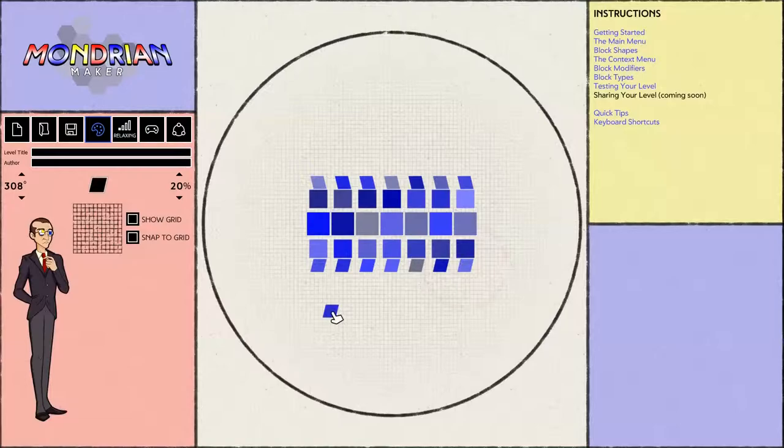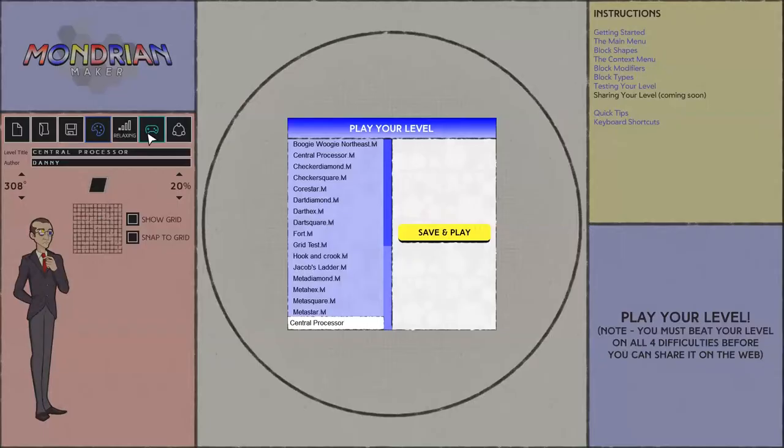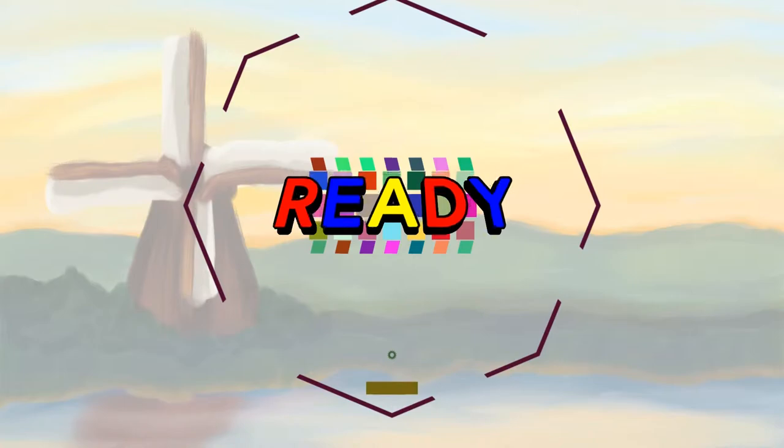Now I like the look of this level, so what I'm going to do is I'm going to call this central processor, and give an author name, and we go ahead and test this out. So if I hit play, save and play, it loads right into the game.